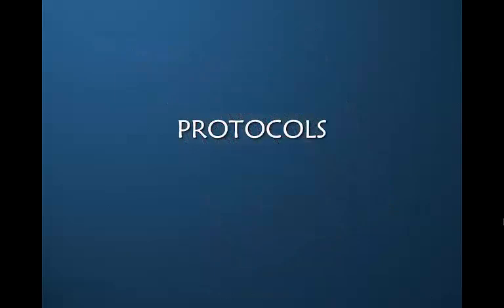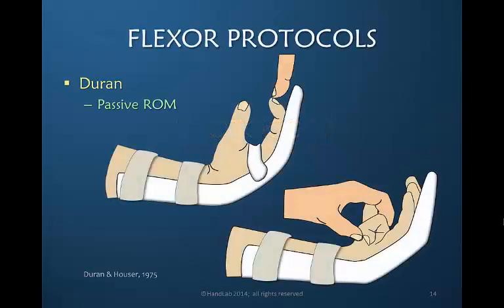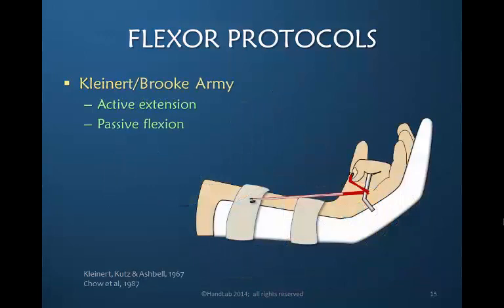Now most of us would begin a presentation on flexor tendons talking about protocols, but the purpose of this presentation is not to provide protocols. It is to look at the individual characteristics of each zone and how they could be modified within a current protocol. The Duran protocol, which consisted only of passive range of motion of the digit into flexion and very limited extension, was one of the earliest protocols attempting to mobilize flexor tendons earlier than what had previously been a period of six weeks.